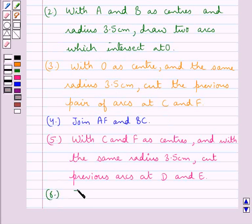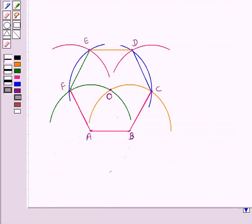In the next step we join CD, DE and EF to get the required hexagon. We have joined CD, DE and EF.